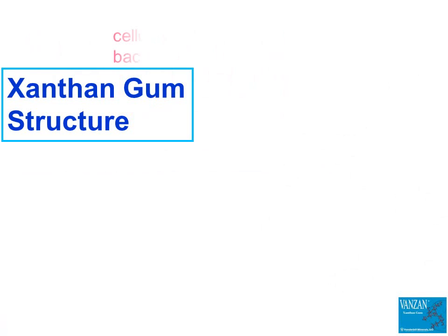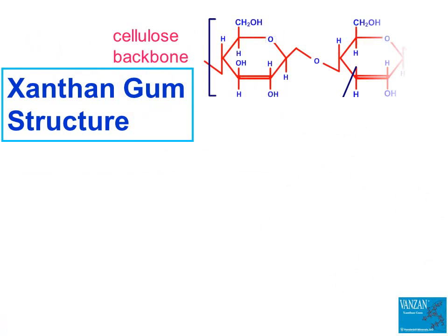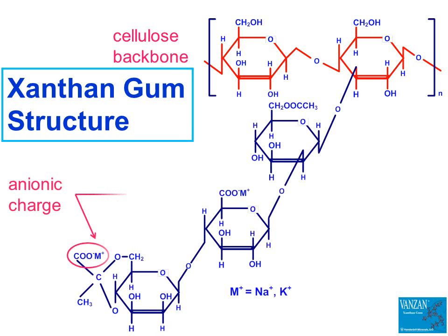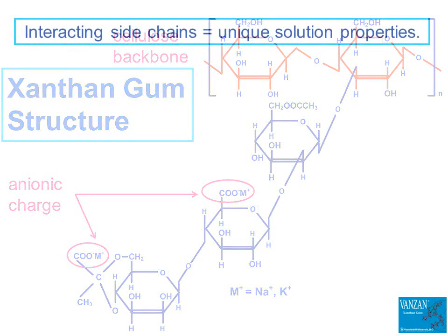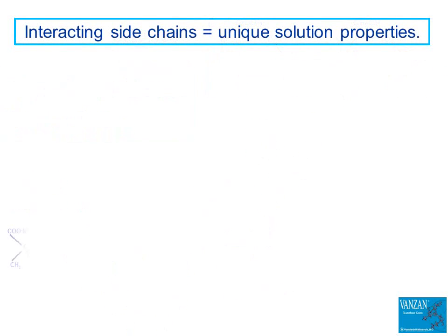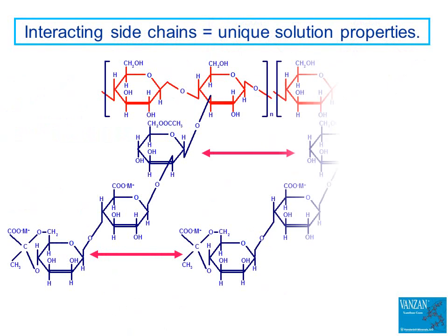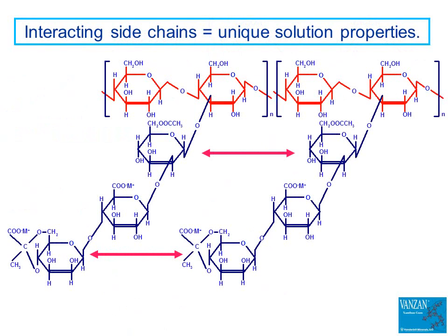The xanthan polymer's backbone is cellulose. What makes xanthan gum different from cellulosic thickeners such as CMC, HEC, or HPMC are the trisaccharide side chains with the carboxylate groups that give the gum its negative charge. It is the interaction among these trisaccharide side chains that give xanthan gum its unique solution properties.